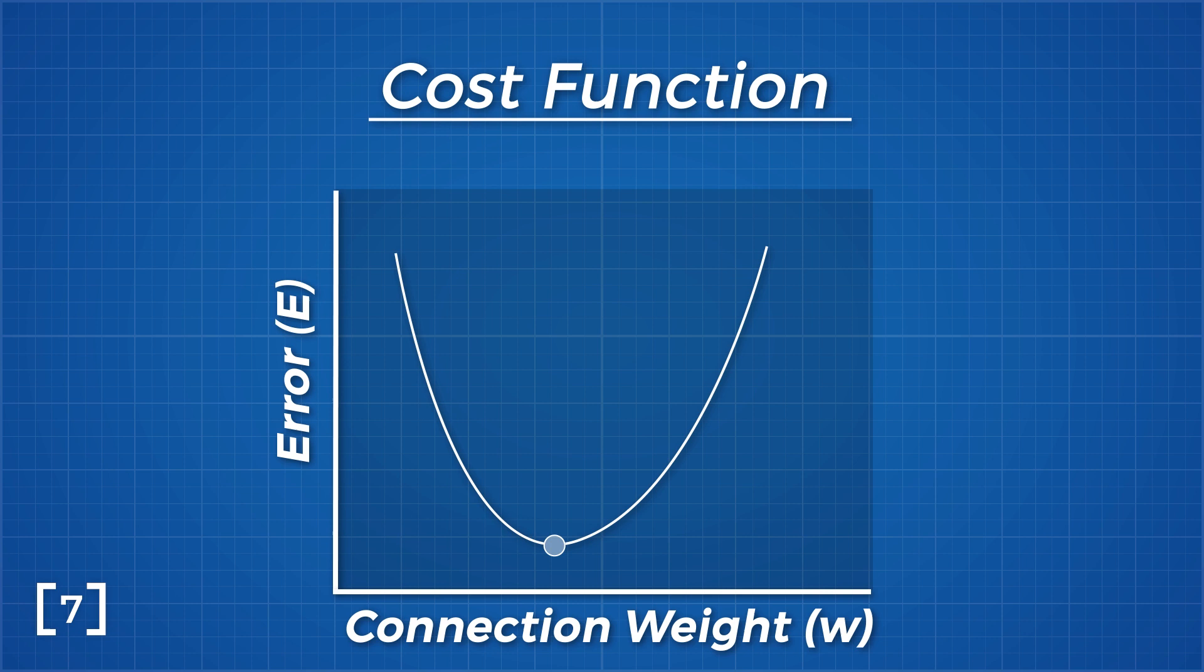So if the goal for the network is to find the lowest point of this function, it can calculate the derivative of the cost function with respect to this one weight, to know the direction it needs to move towards in order to find the local minima. Then through trial and error, making steps toward the minimum, the model will gradually converge towards the lowest value of the function.